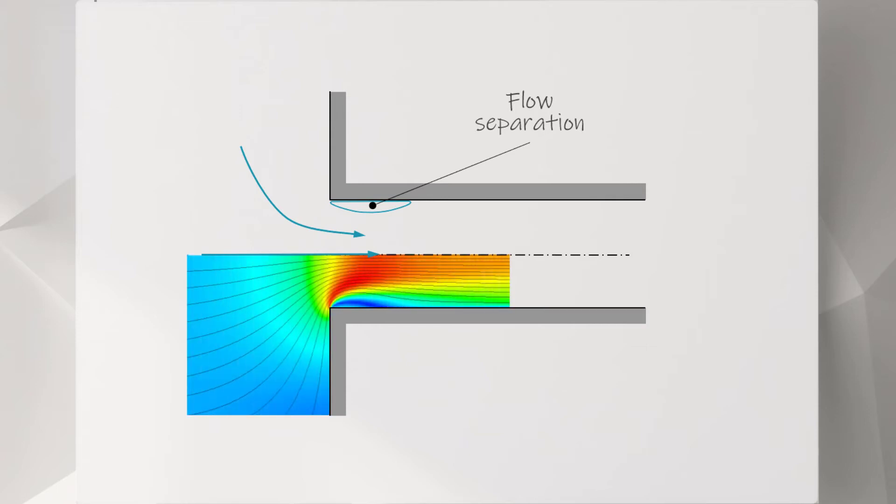Reported here is a section of the numerical results for an entrance region overlaid on our sketch. The colors represent the velocity magnitude, where the blue is the lowest value and the red is the highest one. You can see that the flow accelerates and the color moves from blue to red. The flow is accelerating as it enters the pipe and then later it starts decelerating, reaching its final velocity. The darker blue region near the corner represents the region where we have flow separation.